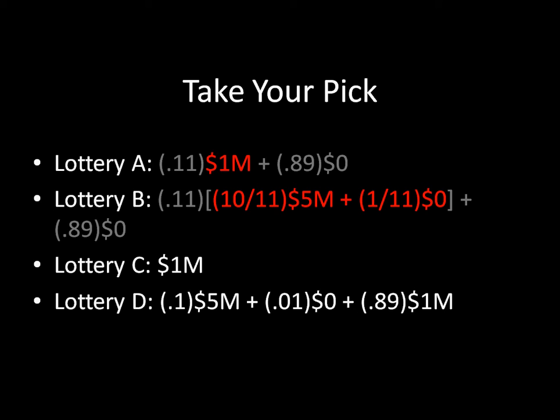Whether you prefer what's in red on the first line or what's in red on the second line needs to be determining your preference for Lottery A versus Lottery B. If you prefer $1 million to that nested lottery, you should have originally preferred Lottery A to Lottery B. And if you preferred the lottery highlighted in red, then you should have said you preferred Lottery B to Lottery A.